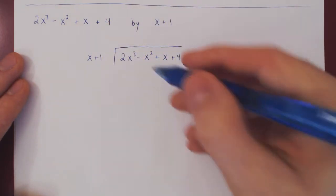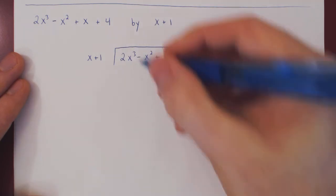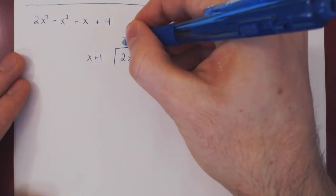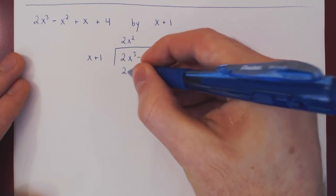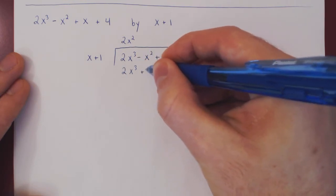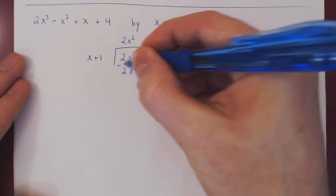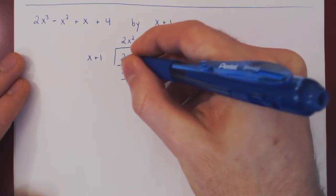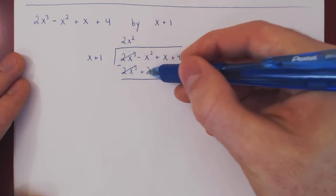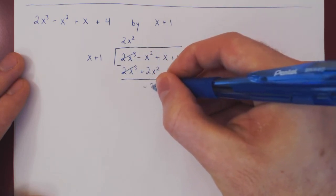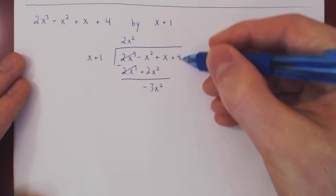Let's see what happens. What times x is 2x cubed? Well, 2x squared. Multiply out — we get 2x cubed plus 2x squared. We subtract: these two cancel. We get negative x squared minus 2x squared, which is negative 3x squared, and we have a leftover of x plus 4.